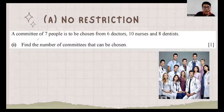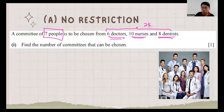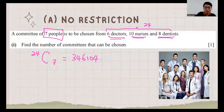The first question: a community of seven people is to be chosen from 6 doctors, 10 nurses, and 8 entities — a total of 24 people. We need to form a community of 7 people from these 24. The answer is 346,104 ways to form the community.